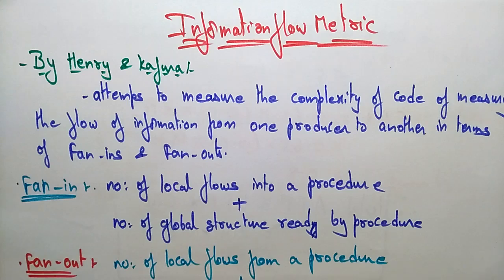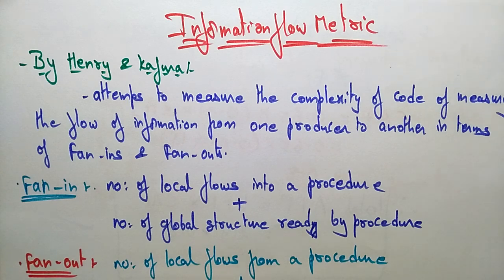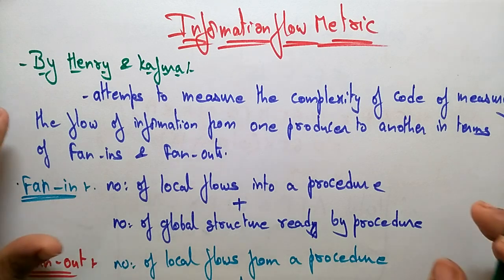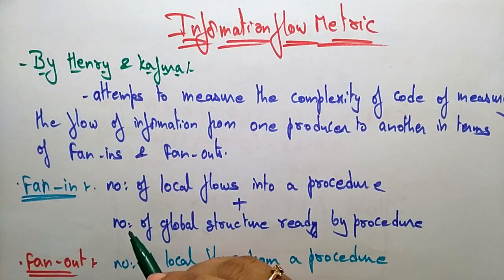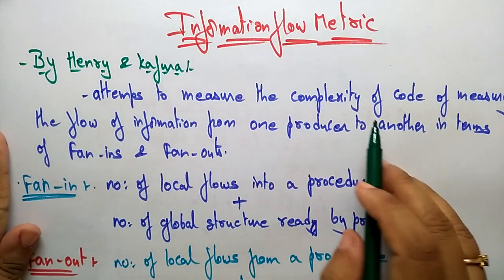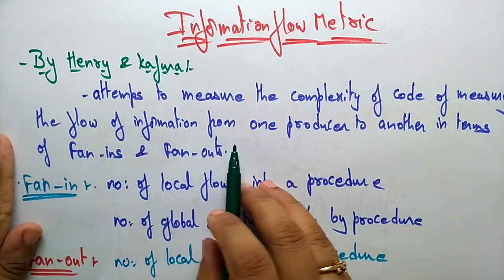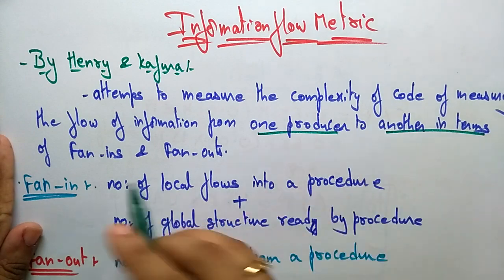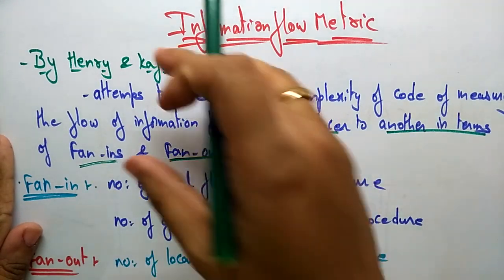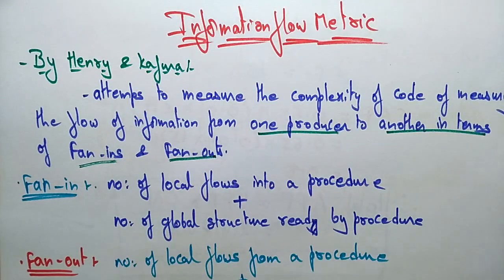Coming to the next topic, the Information Flow Matrix. So far we have discussed functional point analysis and lines of code. Now let us see the Information Flow Matrix. Henry and Kafra attempt to measure the complexity of code by measuring the flow of information from one procedure to another in terms of fan-in and fan-out.